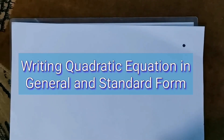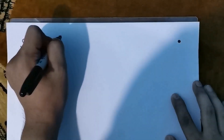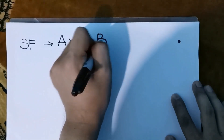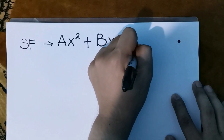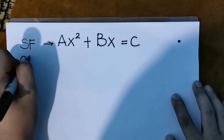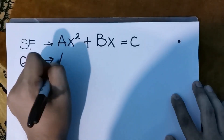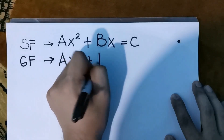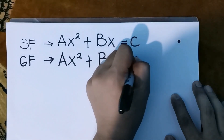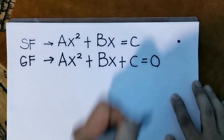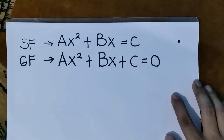In expressing quadratic equations in standard form, it is in the form of ax squared plus bx equals to c. While general form is in the form of ax squared plus bx plus c equals to 0. We will be having examples and we need to express each in both general form and standard form.